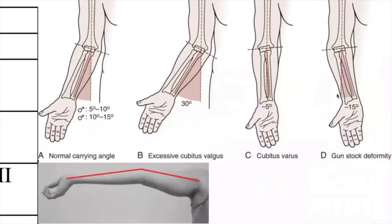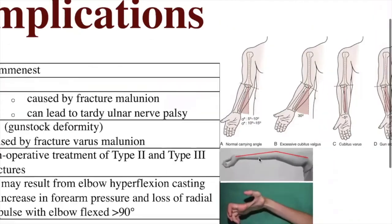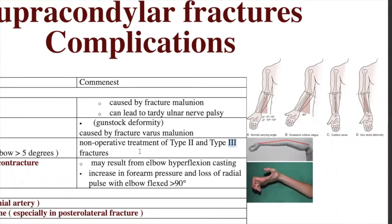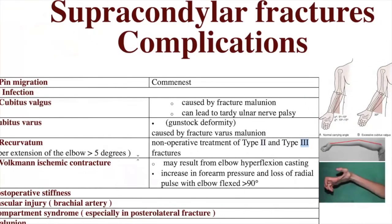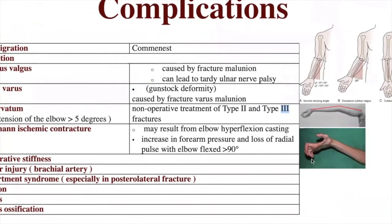Cubitus valgus and cubitus varus refer to the angle between the longitudinal axis of the humerus and the ulna. An angle of 30 degrees or more is cubitus valgus — the elbow is inward and the hand is outward. Cubitus varus has an angle of minus 5 degrees, and gunstock deformity has an angle of minus 15 degrees — the elbow is outward and the hand is inward. Recurvatum deformity occurs in type 2 and type 3 fractures if not managed operatively, presenting as hyperextension of the elbow more than 5 degrees. Volkmann's ischemic contracture occurs if flexion casting is done at more than 90 degrees.